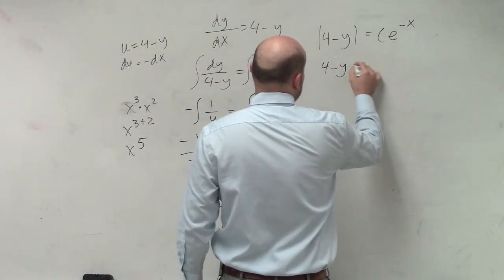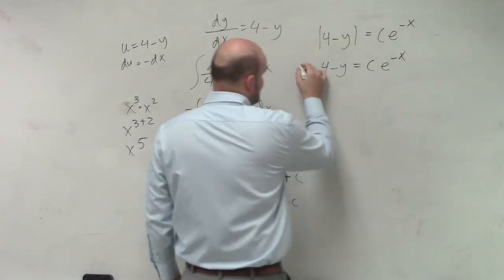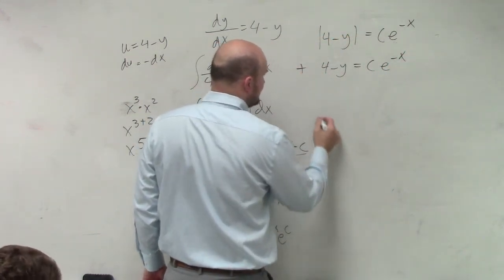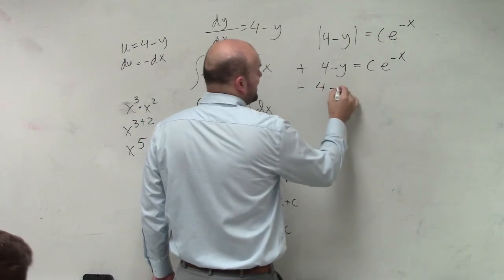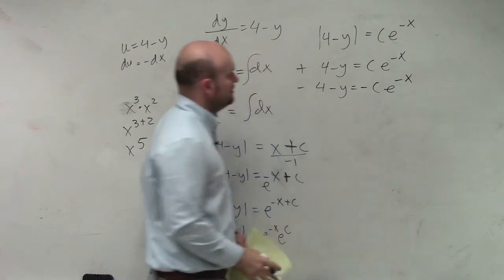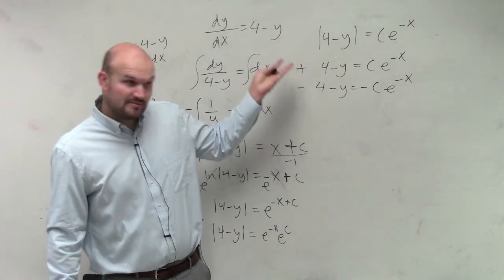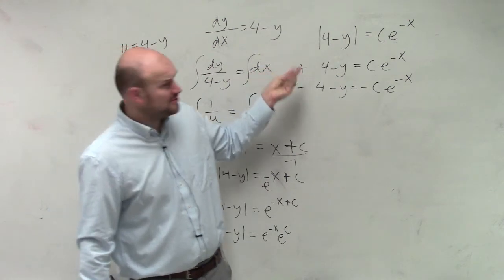So, we can say 4 minus y is equal to c e to the negative x, and that's the positive. And then you create the negative, which is 4 minus y equals negative c e to the negative x. So, you have to do the positive and the negative case for absolute value, right? Remember solving absolute value equations from Algebra 2.